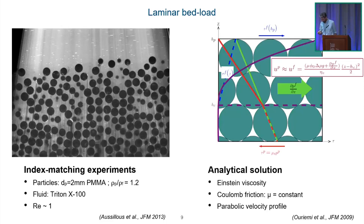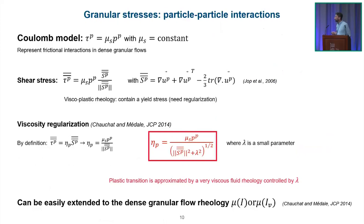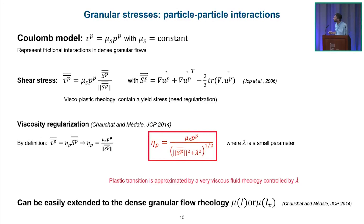Taking Einstein viscosity for the fluid phase and a Coulomb friction rheology with mu equal constant, you get an analytical solution: a parabolic velocity profile from the yield position to the surface. To implement granular rheology, the Coulomb model is tau_p = mu_s * P_p. Making this expression tensorial, I assume the particle stress is aligned with the velocity shear rate tensor, and can isolate the viscosity for the particle phase. If the shear rate tensor magnitude goes to zero, the viscosity diverges, so regularization is needed.